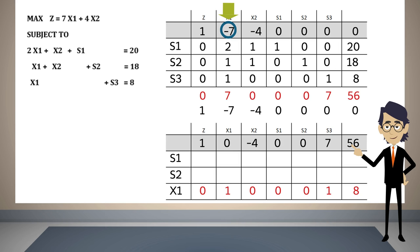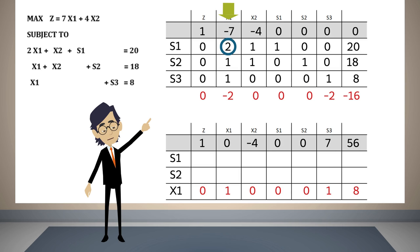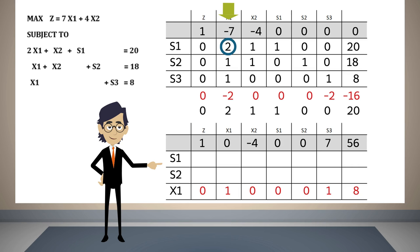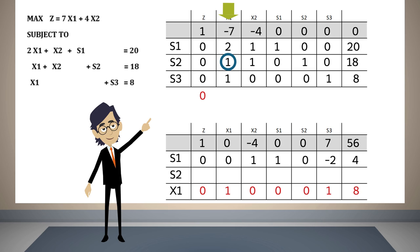In the same way we converted minus seven into zero, now we will convert the two into zero. We start by multiplying the pivot row by minus two and add it to the row where the two appears. The result of the sum will be placed in the s1 row. All that remains is to transform into zero the one that appears in the s2 row. We multiply by minus one the pivot row and add it to the s2 row, placing the result in the new s2 row.